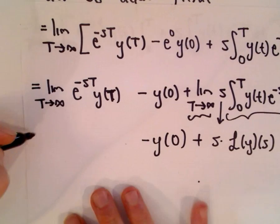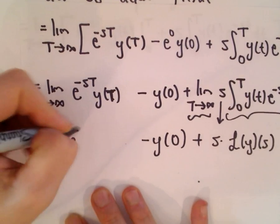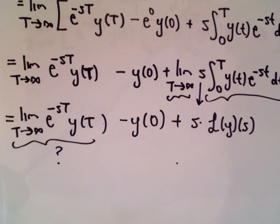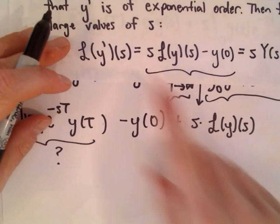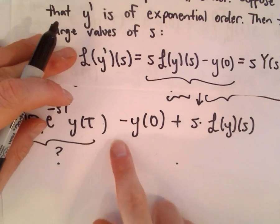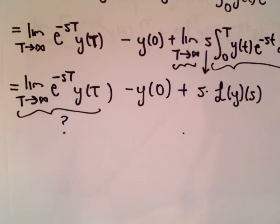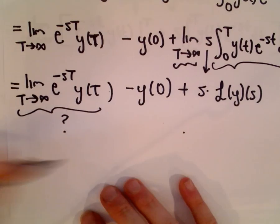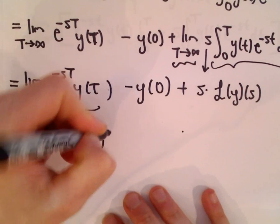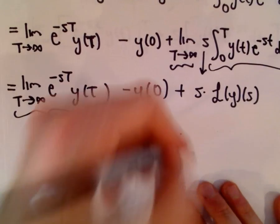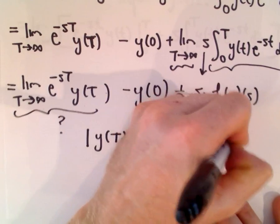The only remaining question is what happens to the boundary term e^(-sT) · y(T) as T→∞. If we can show this goes to zero, we'll have proved what we want: s times the Laplace transform minus the initial condition y(0). To handle this, we use the fact that y is of exponential order — meaning |y(t)| ≤ Ce^(at) for t > 0.